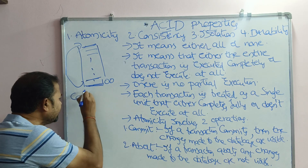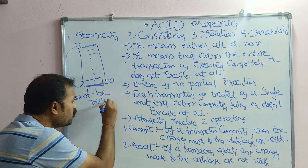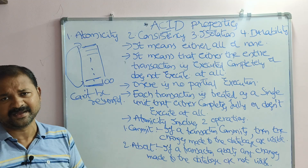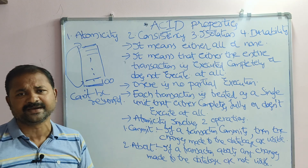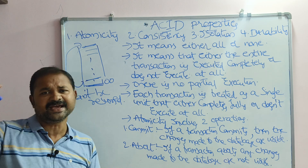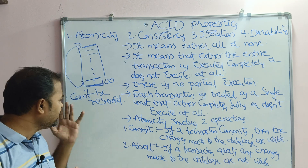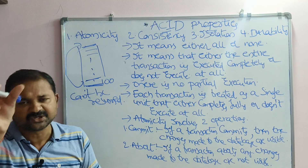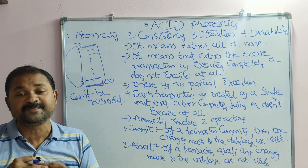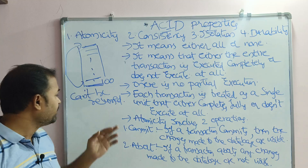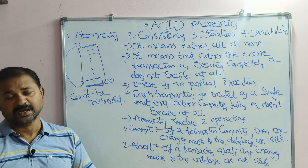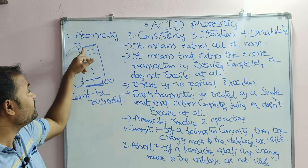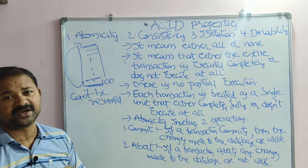A transaction cannot be resumed. Consider the example of movie downloading — if internet fails after 90% of the movie is downloaded, we can resume the downloading and get the remaining 10%. But here, a transaction cannot be resumed. We can only restart the transaction, meaning we have to start execution from the first instruction again.